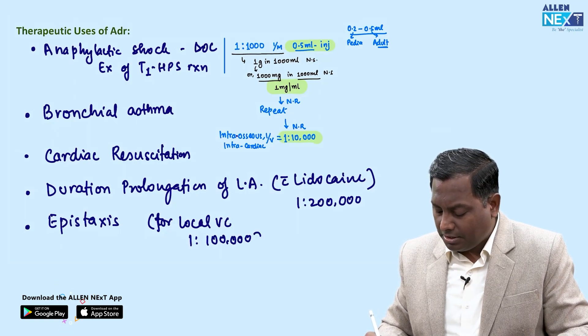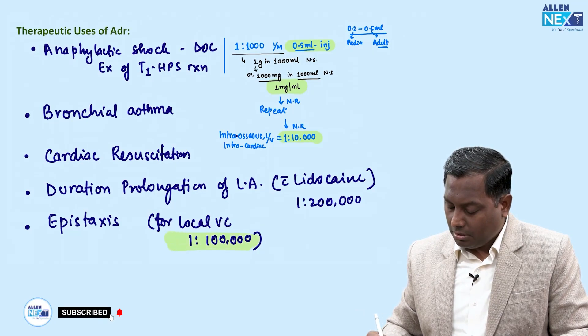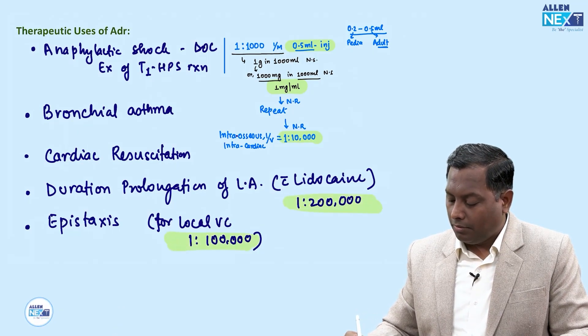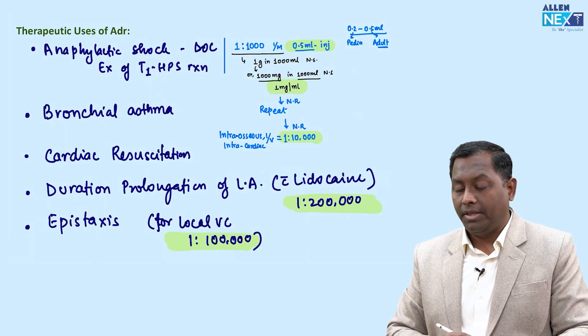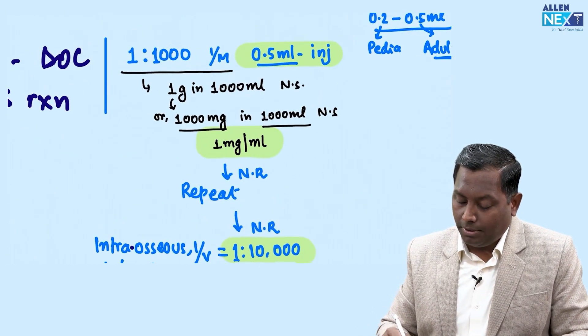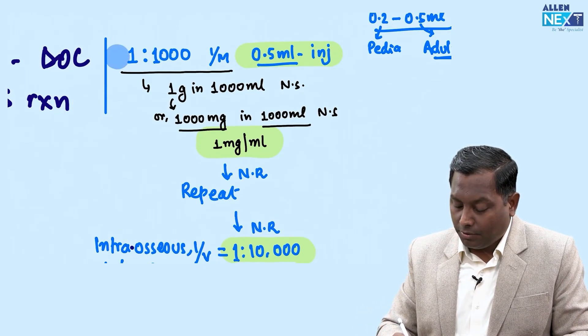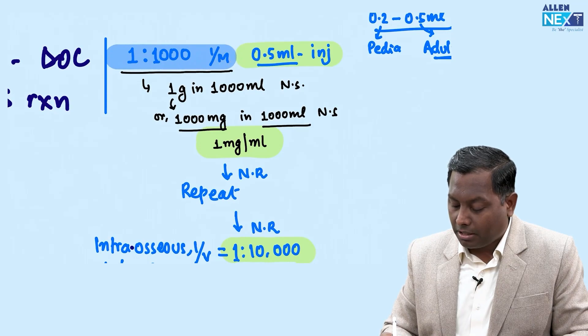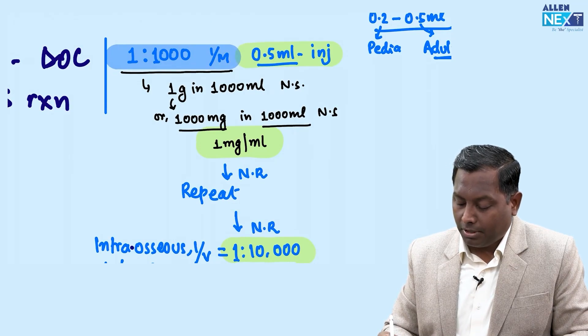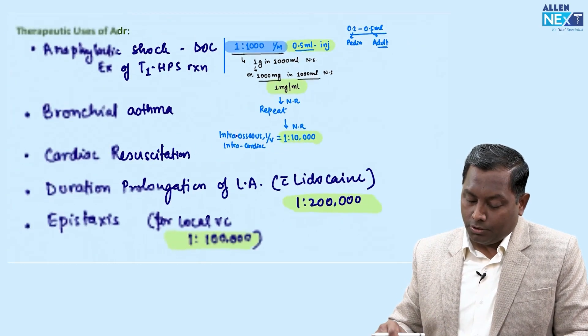For local vasoconstriction, the range we use is 1:80,000 to 1:100,000. With lidocaine 1:200,000, and in emergency conditions 1:1000, which will be intramuscular route. Please don't make any mistake - there's no scope for error and you can definitely expect a question on this topic.